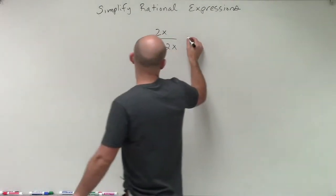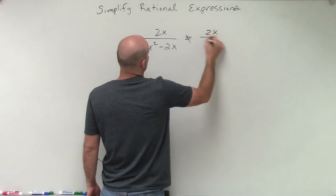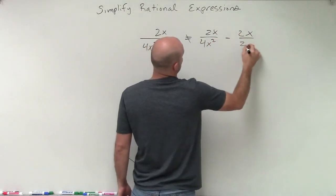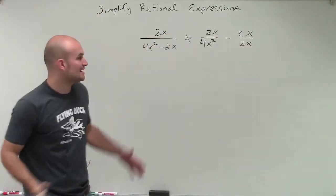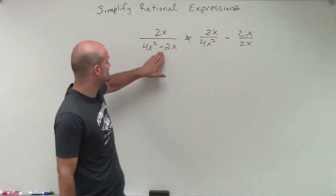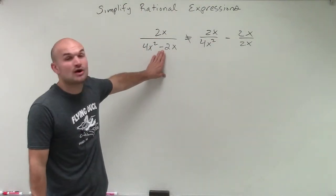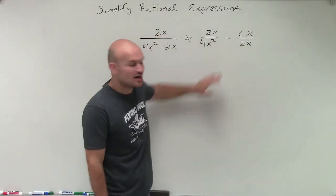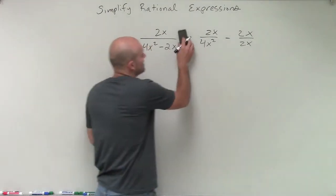So first of all, do not make this mistake and try to break this up as 4x squared minus 2x over 2x. A lot of students will make this mistake, and I'm just going to go up front with it. We cannot separate across subtraction and addition. We can separate across multiplication and division, but not across addition and subtraction. So do not make that mistake.